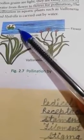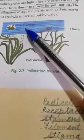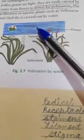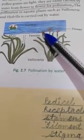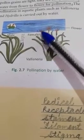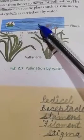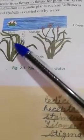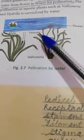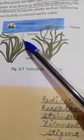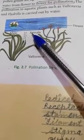Then the pollen grains releases and float on water and reach up to the stigma. Because stigma is large and feathery, so it can easily catch the pollen grains. And like this, the water pollination occurs.